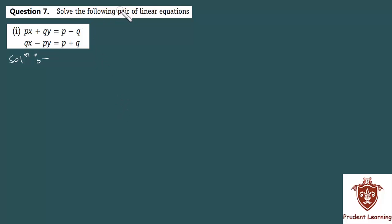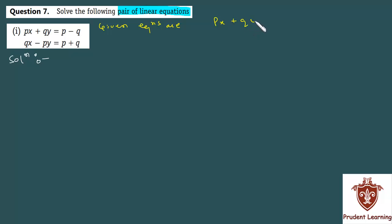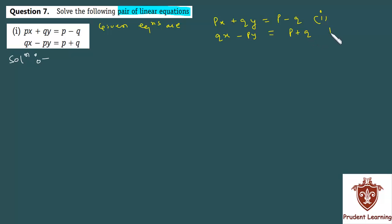Solve the following pair of linear equations. The given equations are Px plus Qy is equal to P minus Q — call it equation 1 — and Qx minus Py is equal to P plus Q — equation 2.